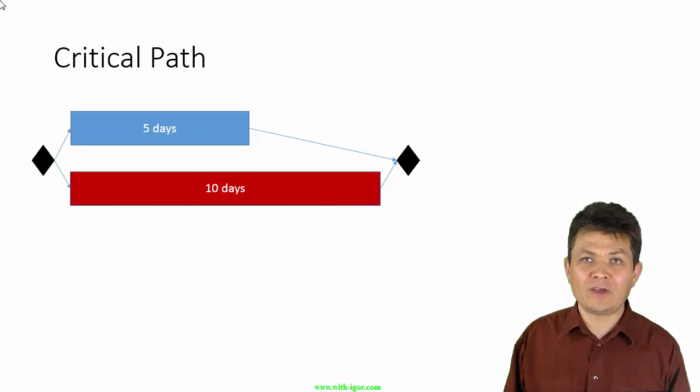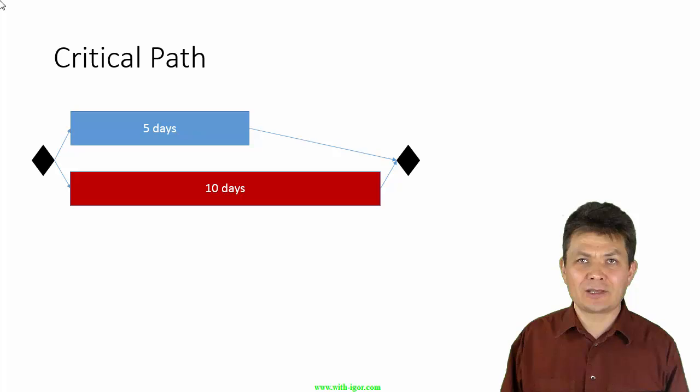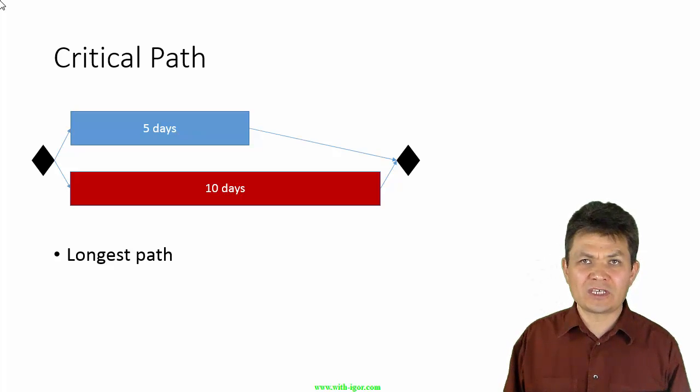Well, the 10 days path is the critical path. So, the critical path is basically the longest path through the schedule.